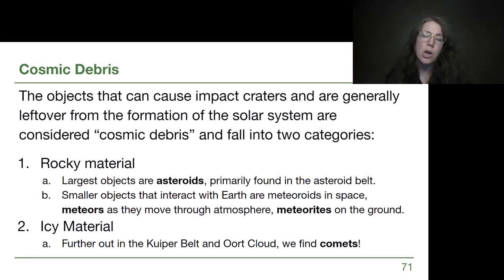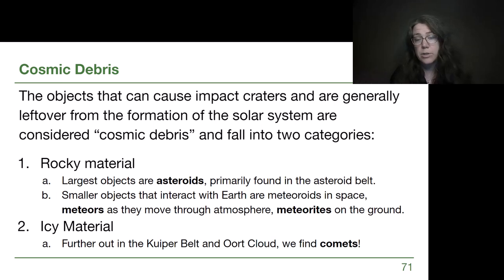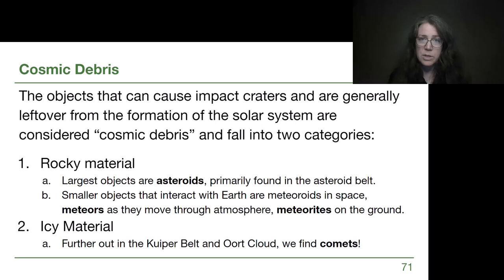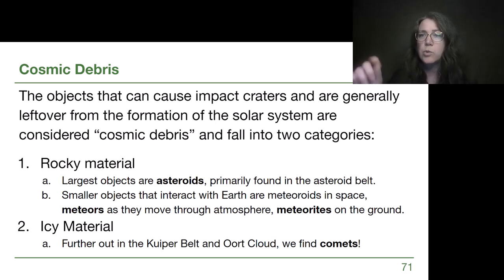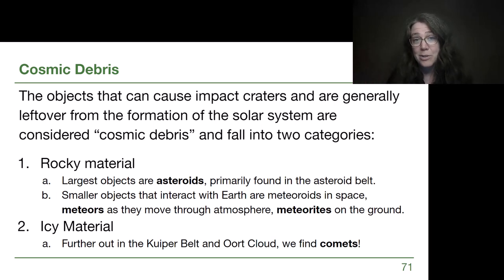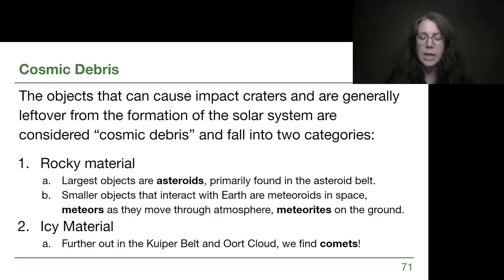When we think about the things that cause craters, we're often thinking about leftover material from way back when the solar system formed. For the rest of this video we'll talk briefly about what that leftover material looks like, and then finish up by understanding the formation of the solar system as a process. This cosmic debris is what we use to study what the solar system materials looked like so we can work backwards in time.